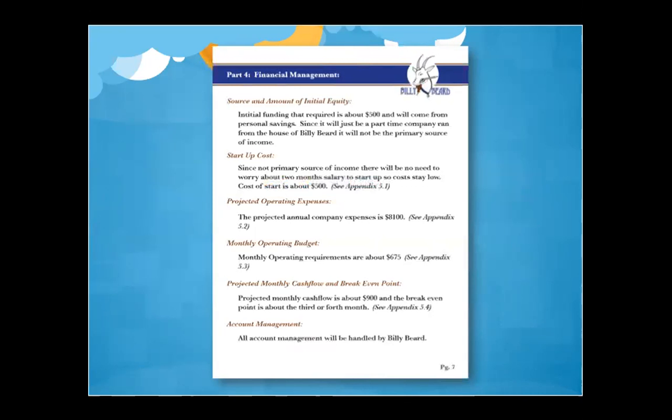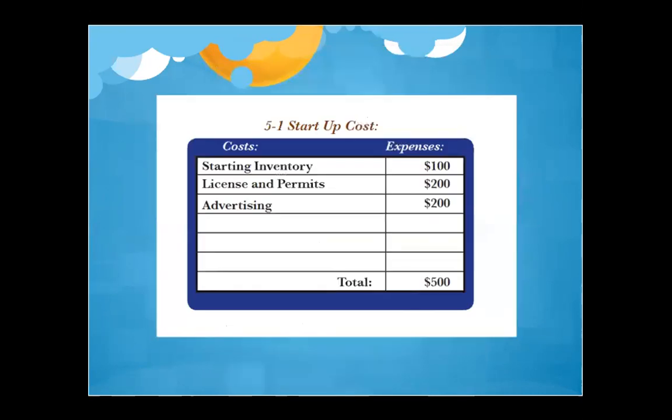The projected monthly cash flow is $900 and break-even point is around the third or fourth month. All account management is handled by Billy Beard as sole proprietor. Much of the appendix information shown here — like the detailed financial charts — was part of a previous version of this class, so you won't have to produce all of that.